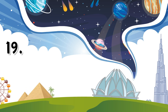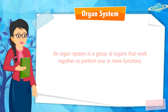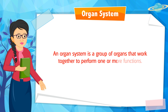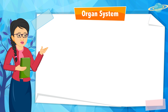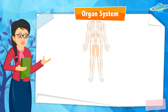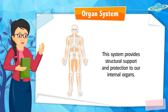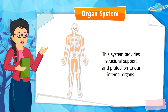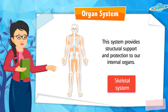Chapter 19: Organ Systems. An organ system is a group of organs that work together to perform one or more functions. This system provides structural support and protection to our internal organs. Can you identify it? It is the skeletal system.